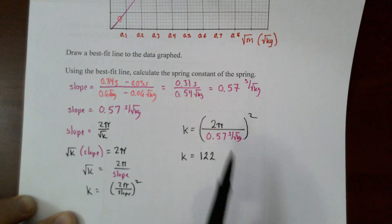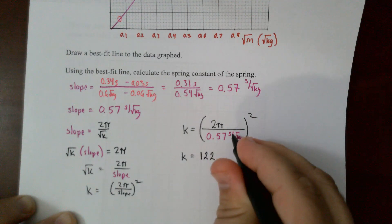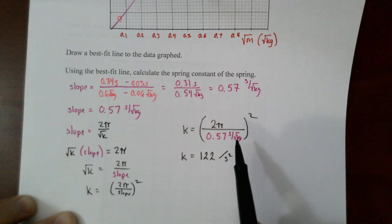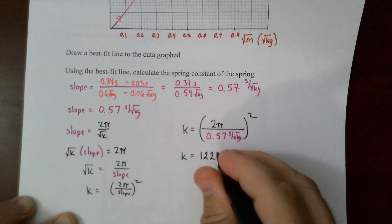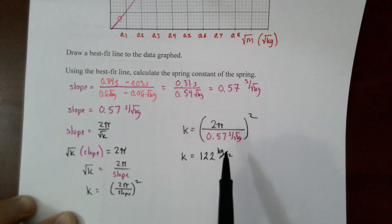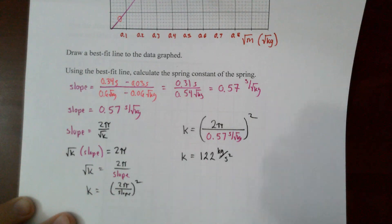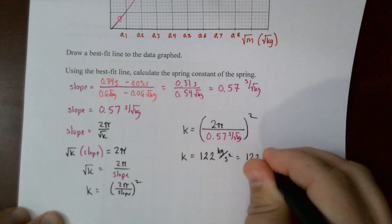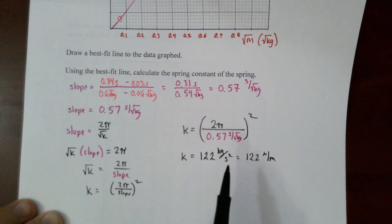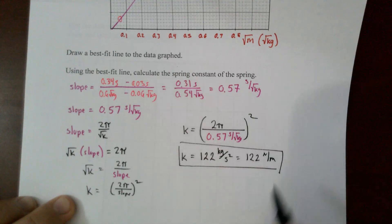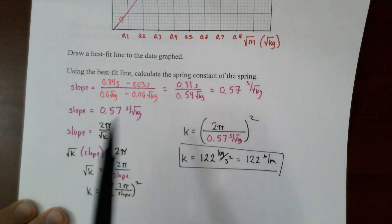For the units: seconds squared is in the denominator, and kilograms is in the numerator after squaring √kg, giving kg/s². This can also be written as N/m, which is how you typically think about a spring constant — and that unit is perfectly correct here.